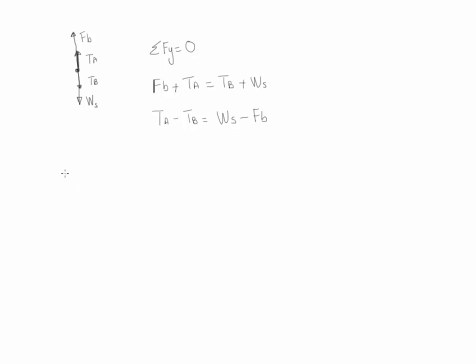Let's now define the weight of the sinker. It's going to be the specific weight of the sinker times the volume of the sinker. We do not have the specific weight of the sinker. However, we do have the specific gravity. So we use specific gravity times the specific weight of water times the volume.